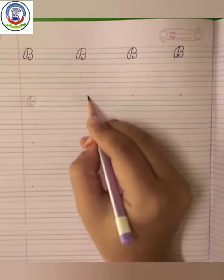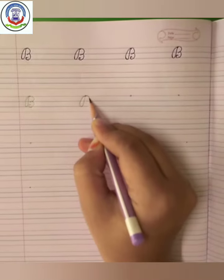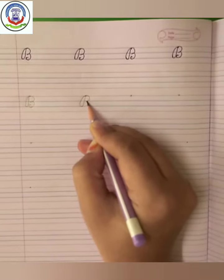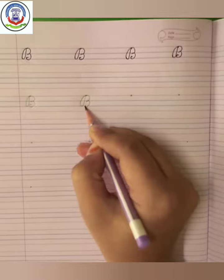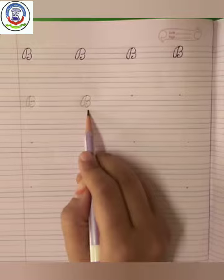Again, we make standing line and then go back side and make small curve and make another curve like this. B says burr, burr burr bat.